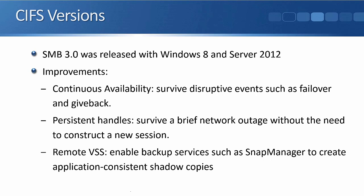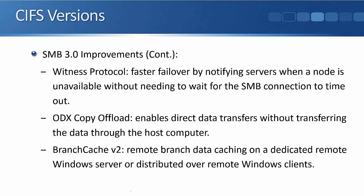SMB 3.0 supports remote volume shadow copy services, which enables backup services like NetApp SnapManager to create application-consistent shadow copies — we'll talk about SnapManager in a later lesson. Another improvement is the witness protocol, which gives faster failover by notifying servers when a node is unavailable without waiting for the SMB connection to time out.